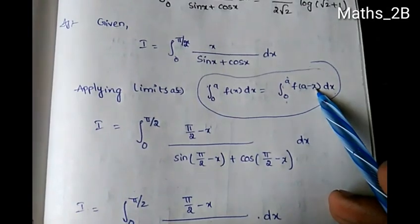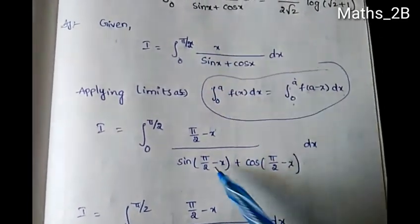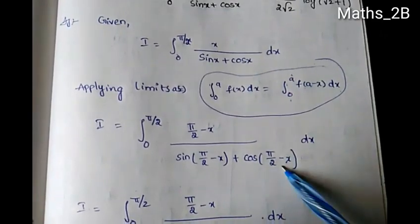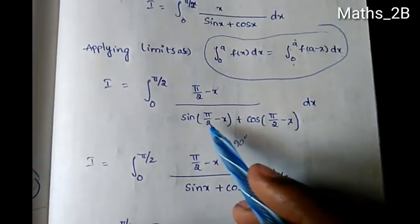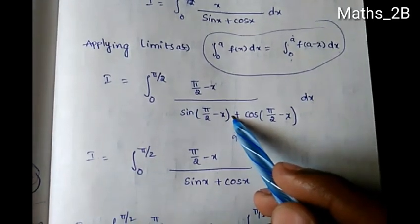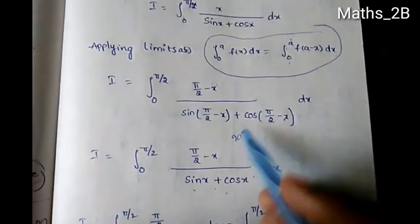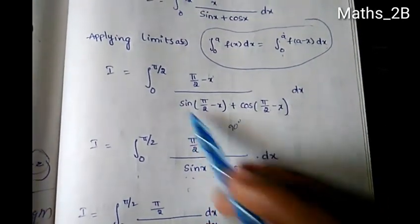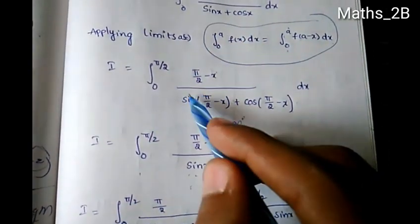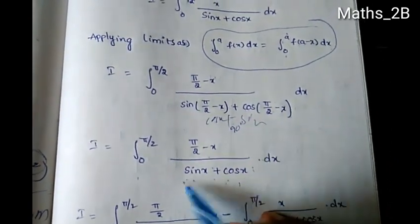So we have integration from 0 to π/2. We substitute x with a minus x, which gives sin(π/2 minus x) plus cos(π/2 minus x). Since sin(π/2 minus x) equals cos x and cos(π/2 minus x) equals sin x, the expression becomes sin x plus cos x.